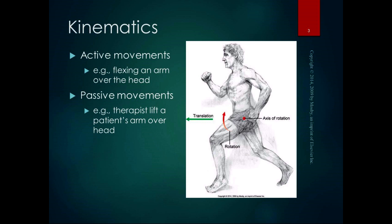We're also going to define the difference between passive and active movements. Active movements are movements created by an active muscle — the person is actively moving a part of their body by themselves, like flexing an arm over the head. If the therapist says to the patient, 'I want you to raise your arm up as high as you can,' and the patient does it under their own power, that is an active movement.